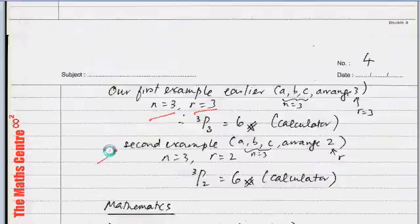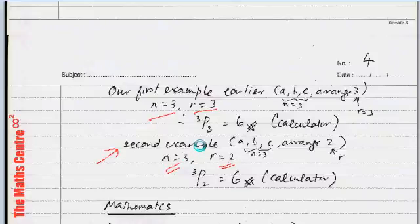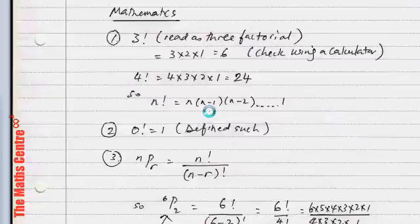In your second example, we had three objects, and we arranged two at a time, like AB, BA, AC, CA, and all those. And we had n equal to 3, and r equals to 2. If you plug it into your calculator, 3P2, you will also get 6.